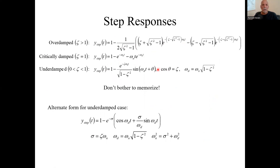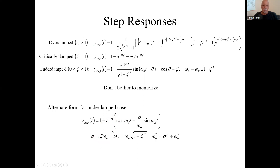Looking at the underdamped case, you get a sinusoidal at a certain frequency — omega sub D, the damping frequency — and it's a function of the parameters of the prototype second-order system. You also have a decaying exponential. There's an alternate form for this which makes some things more clear, showing that decaying exponential where sigma equals zeta times omega_n.